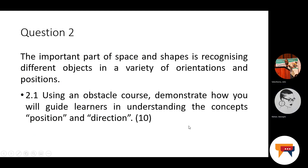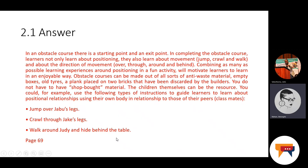Question number two. The important part of space and shapes is recognizing different objects in a variety of orientations and positions. Using an obstacle course, demonstrate how you will guide learners in understanding the concept of position and direction. In an obstacle course, there is a starting point and an exit point. In completing the obstacle course, learners not only learn about positioning, they also learn about movement — for example, jump, crawl, and walk — and about the direction of movement.